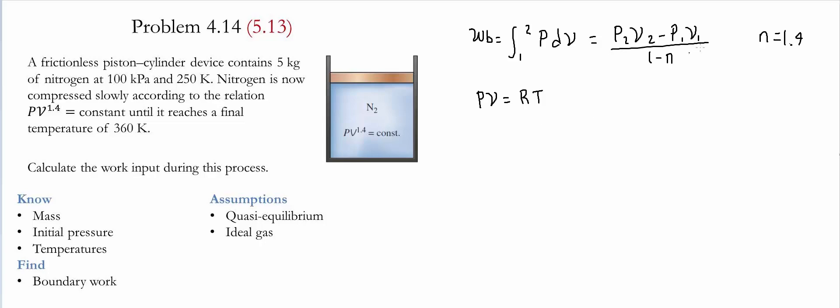If we use this relationship and substitute it in, we see that this formula becomes simply R(T2 minus T1) divided by 1 minus n. Then we go to the back of the book and find that the value of R for nitrogen is given as 0.2968 kilojoules per kilogram Kelvin.